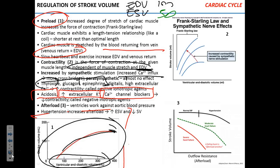Those agents that decrease the force of contraction are negative inotropic agents. These two things — preload and contractility — both contribute to stroke volume. Higher preload means higher end-diastolic volume, which increases stroke volume, which increases cardiac output. If you increase contractility, cardiac output also goes up. The third factor affecting cardiac output is afterload.